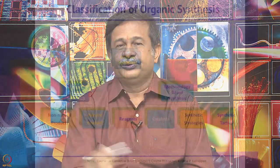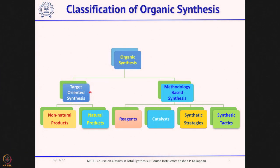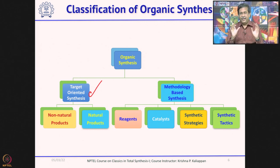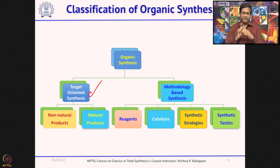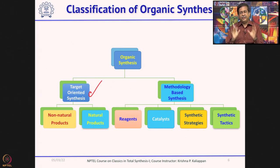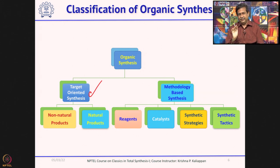Organic synthesis can be broadly classified into two types. The first is target-oriented synthesis, where you have a target — it could be a natural product or a non-natural product — and your job is to synthesize that target. The second type is methodology-based synthesis.